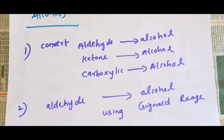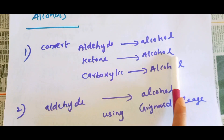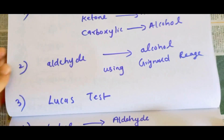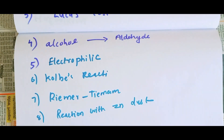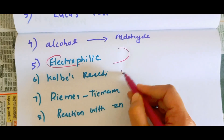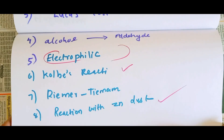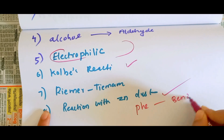We will learn the conversions: how to convert aldehyde to alcohol, ketone to alcohol, and carboxylic acid to alcohol using relevant reagents. Lucas test, alcohol and aldehyde, electrophilic substitution reactions of phenol, Kolbe's reaction, Riemer-Tiemann reaction, and how to convert phenol to benzene.